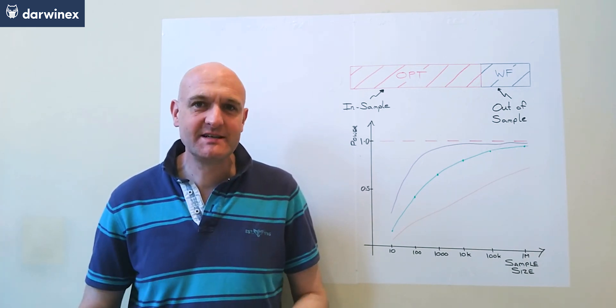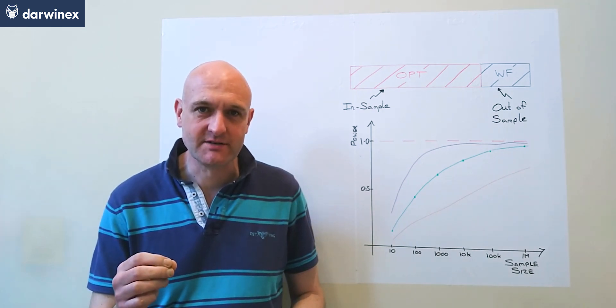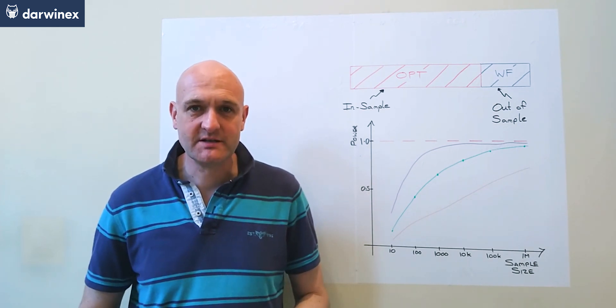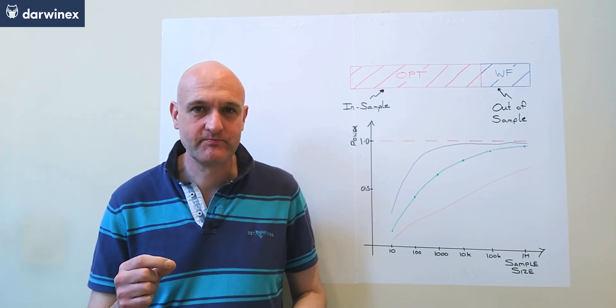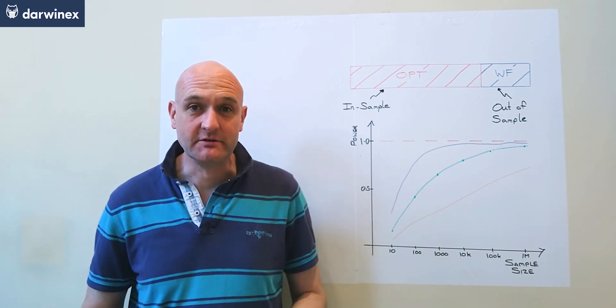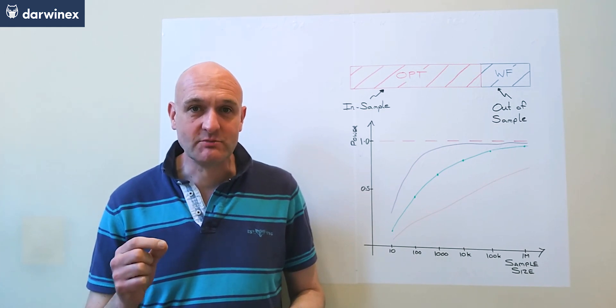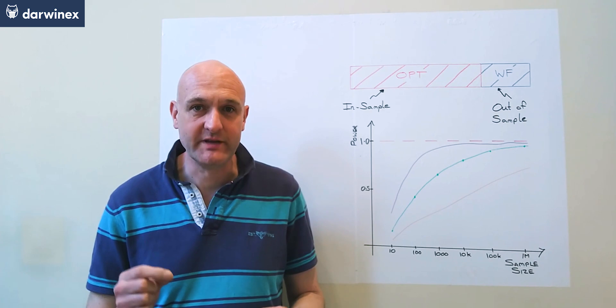We started to get an indication of just how important sample size is to the optimization, and for us, this sample size is determined by the number of uncorrelated trades. In this episode, we're going to dig a lot deeper into this. We'll ascertain some hard statistical quantitative metrics to back up this hunch we have.